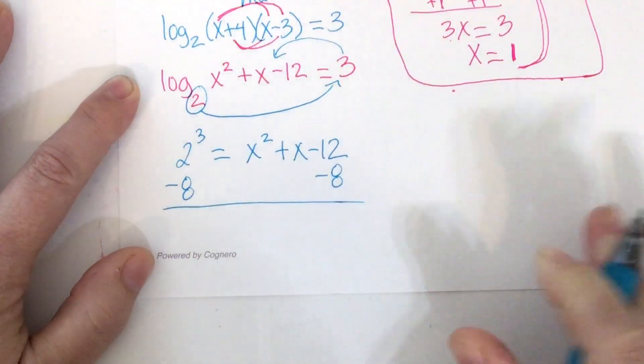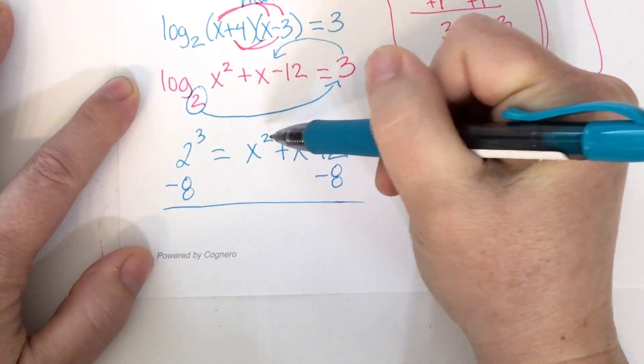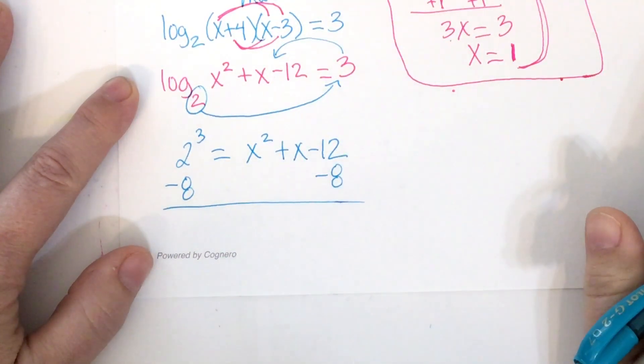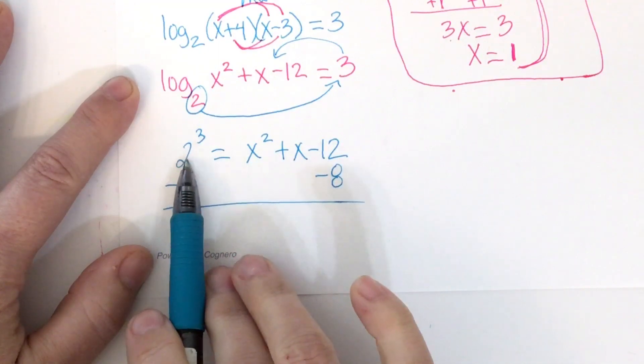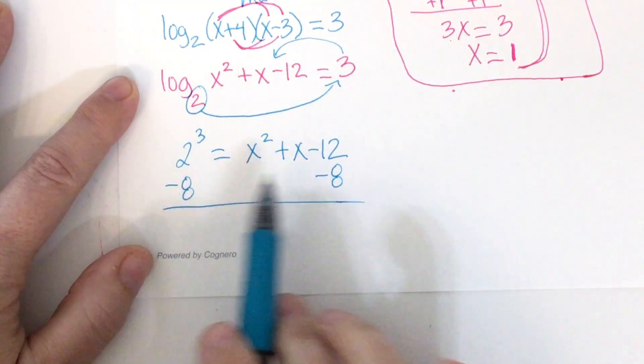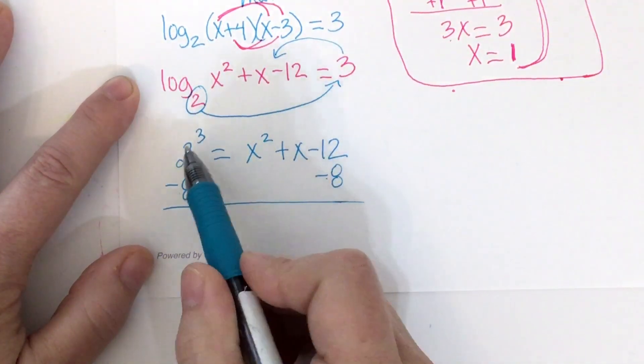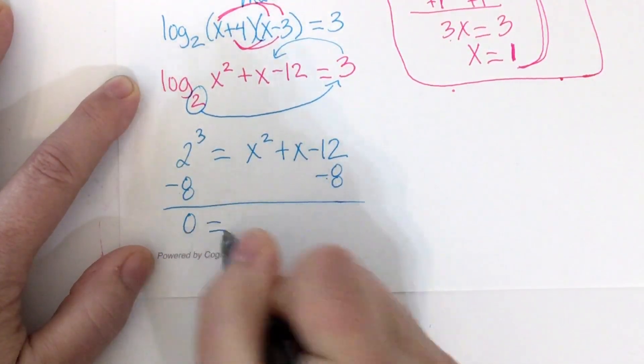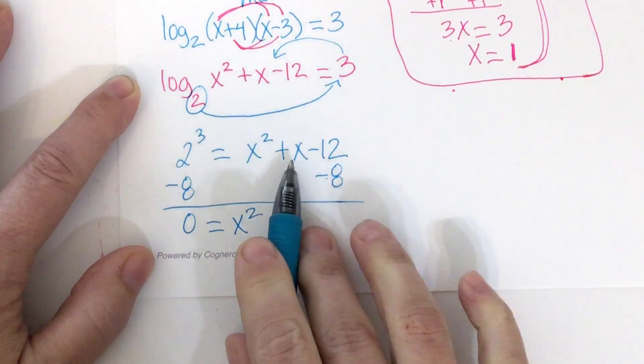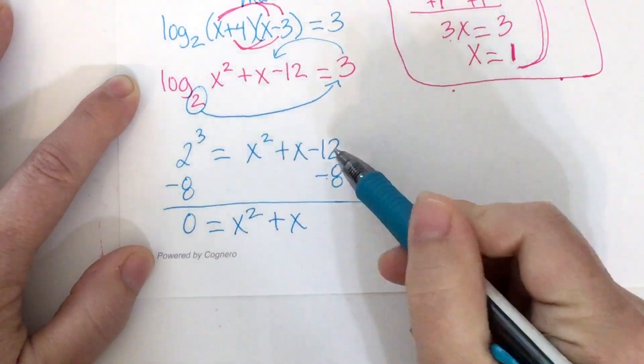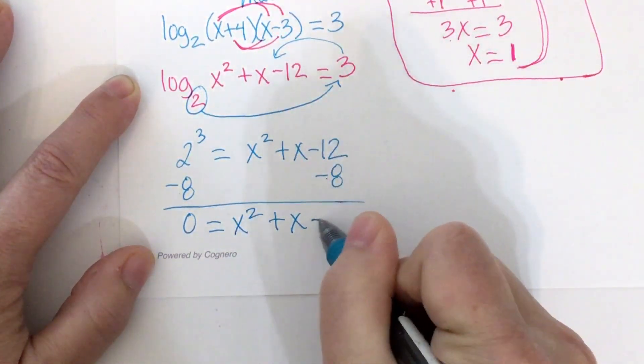So I'm going to subtract 8 from both sides. Remember, if you're working with a quadratic, that's when the highest exponent is a 2, you have to make one side say equal 0. So I'm making this side equal to 0 by subtracting 8. And so 8 minus 8 is 0. Drop your x squared. Drop your plus x. And negative 12 minus 8 makes negative 20.